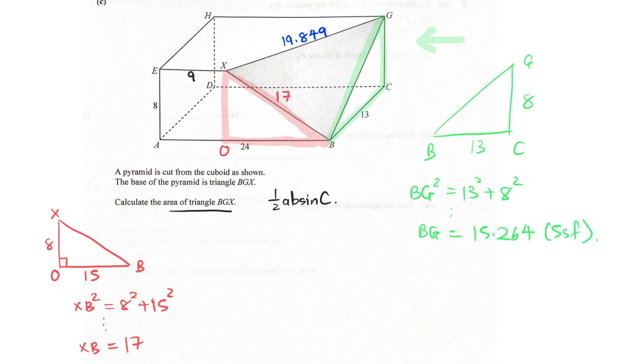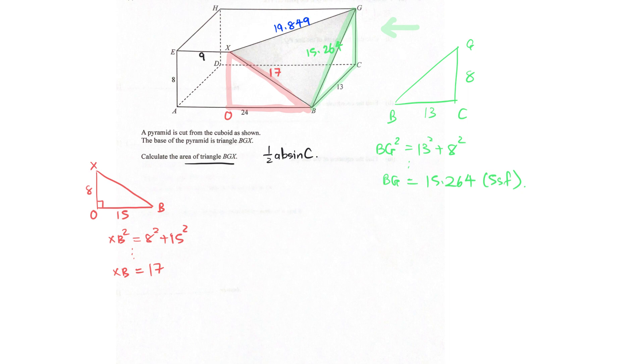So, why did I do that, guys? Why do we need all? This becomes a Trigo question. It was already Trigo, but now we have three sides. We're going to use the cosine rule, everyone.